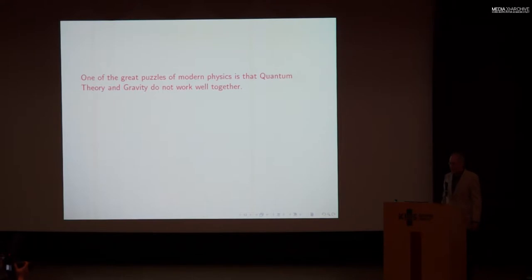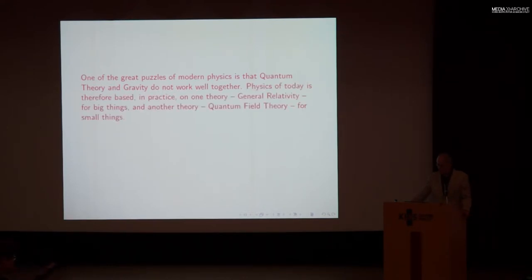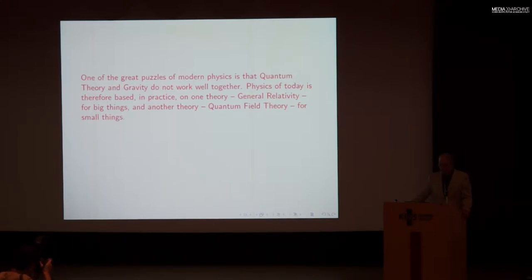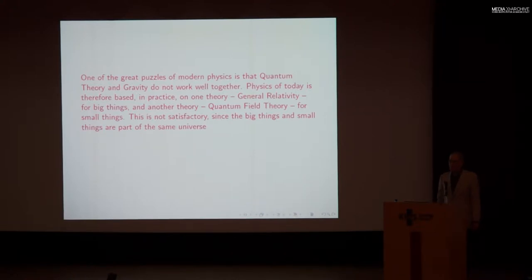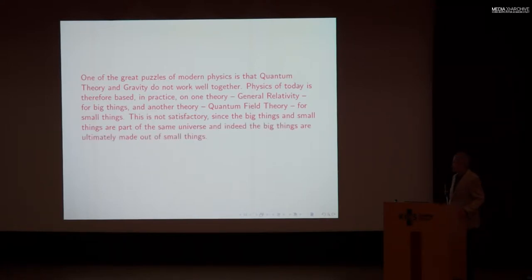One of the great puzzles of modern physics is that quantum theory and gravity, as understood by Einstein, do not work well together. In practice, physics today is based on one theory — general relativity — for the big things, and another theory — quantum field theory — for the small things. That's not satisfactory, since the big things and the small things are part of the same universe, or maybe part of the same multiverse. There should be one theory that governs them, particularly because the big things are ultimately made out of small things.